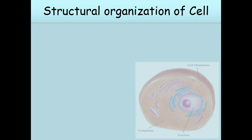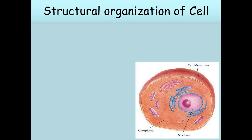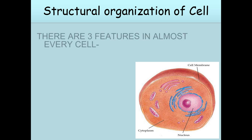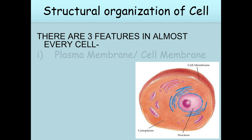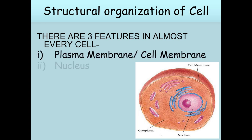Now we will see the structural organization of the cell. There are three features found in almost every cell: plasma membrane or cell membrane, nucleus, and cytoplasm.